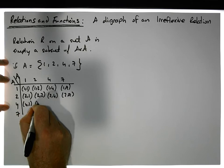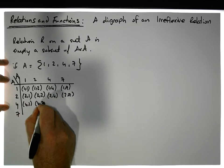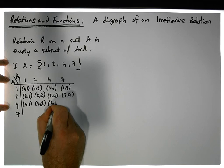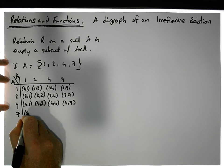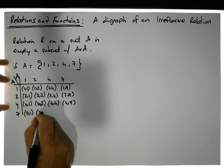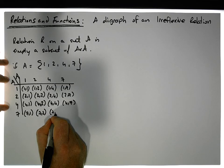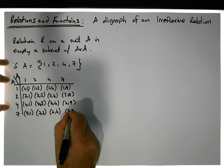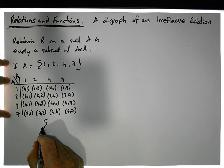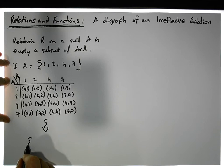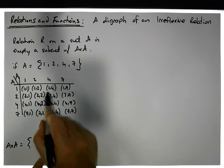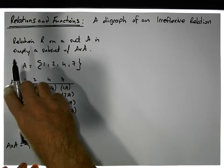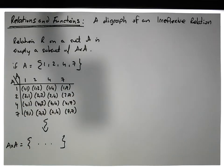Continuing: (4,1), (4,2), (4,4), (4,7), (7,1), (7,2), (7,4), and (7,7). If we take all of these and place them in a set, we get the cross product — a set of ordered pairs. A relation is any subset of this collection.